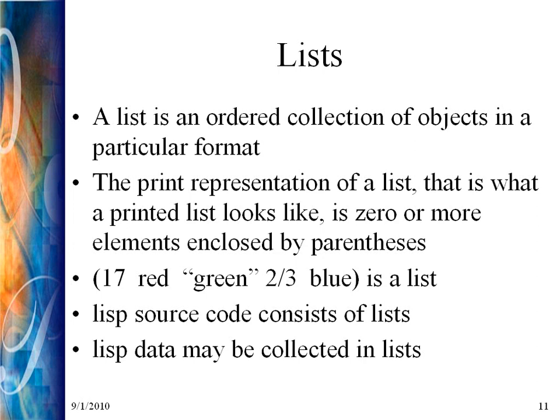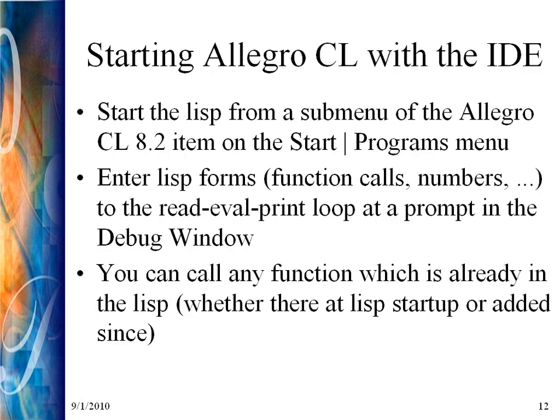LISP source code consists of LISP lists, and LISP data is often collected in lists as well. Starting Allegro CL on Windows: you start LISP as you start many Windows programs — typically as a submenu of an item on the start menu. You can also have a desktop icon. Once LISP is started, you get a prompt, and you can enter LISP forms — function calls or things you want to evaluate — and you will get a response.